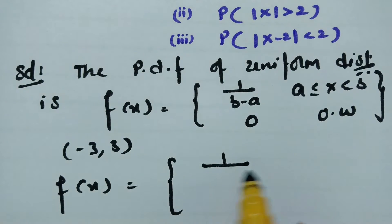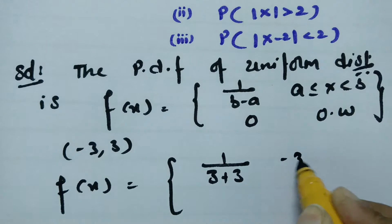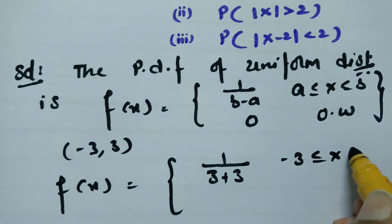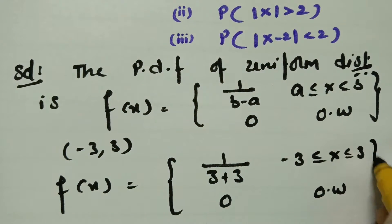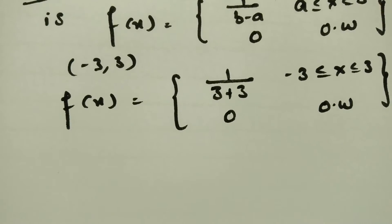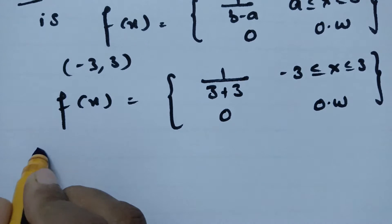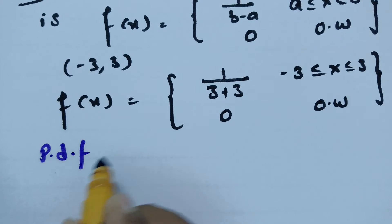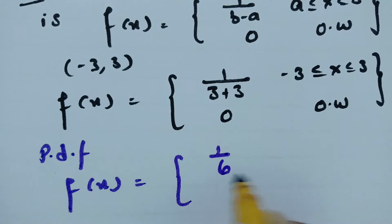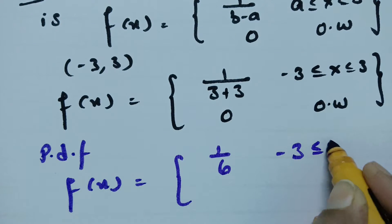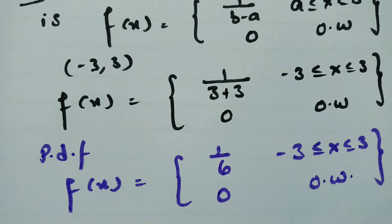Substituting the values, b - a = 3 - (-3) = 6, so the probability density function is f(x) = 1/6 for -3 ≤ x ≤ 3, and 0 otherwise.